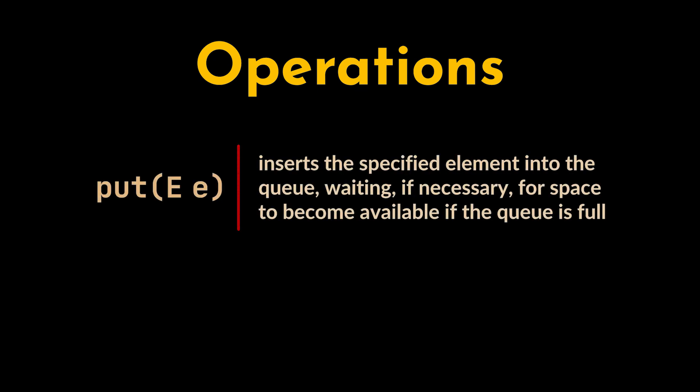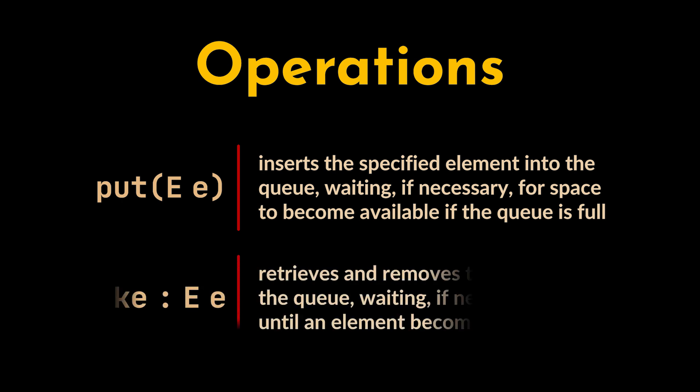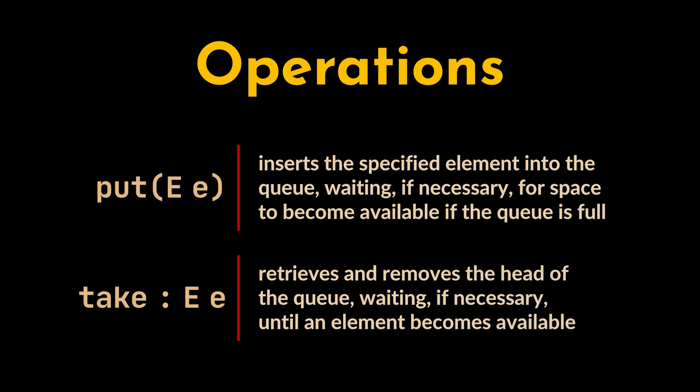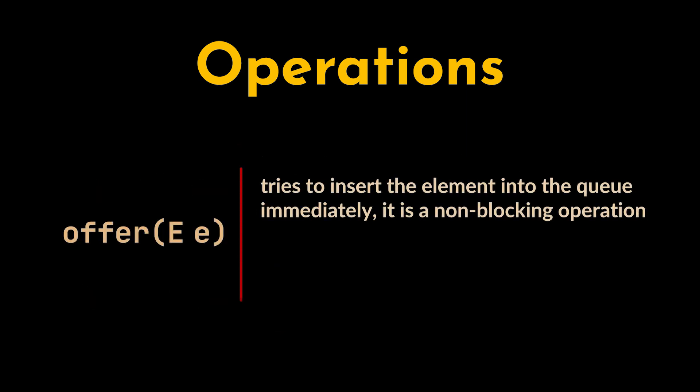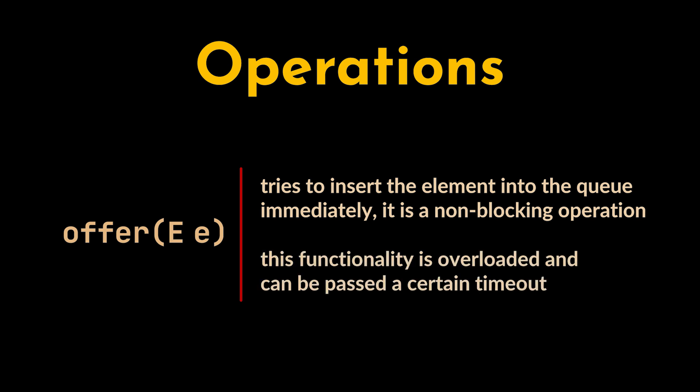Here are the main methods provided by the BlockingQueue interface. The put operation inserts the specified element into the queue, waiting if necessary for space to become available if the queue is full. Take, on the other hand, retrieves and removes the head of the queue, waiting if necessary until an element becomes available. Offer tries to insert the element immediately — it returns true if successful and false if the queue is full, making it a non-blocking operation.